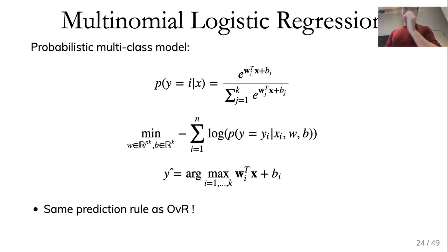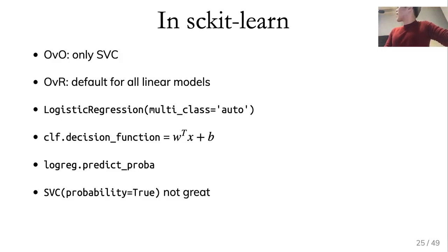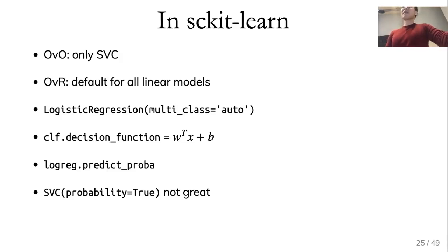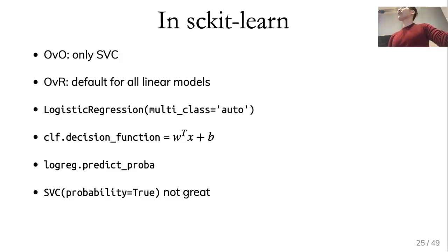Scikit-learn's API prefers one-versus-rest (OVR). The only thing that doesn't use OVR is SVC, which uses one-versus-one (OVO), because it depends on libSVM which prefers OVO. Everything else in the library uses OVR. For logistic regression, in the most recent version it does auto — it chooses the correct loss function for you, choosing multinomial if it's a multi-class classification problem.